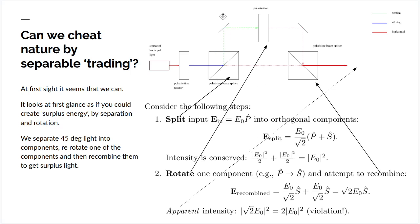Now, at this stage, it's clear that intensity is conserved because the individual intensities are E0 upon root 2. It's a property of light that the intensity is proportional to the square of the amplitude. So if we square that, we see that it sums to the original intensity.